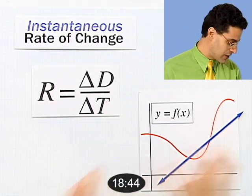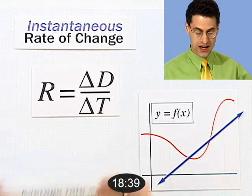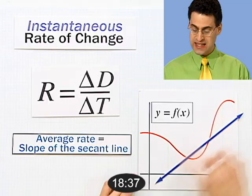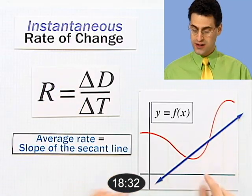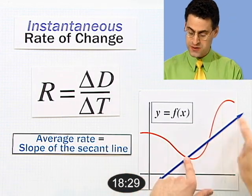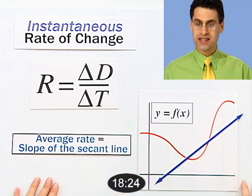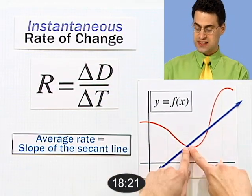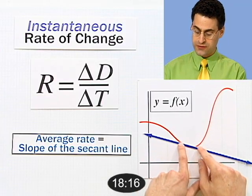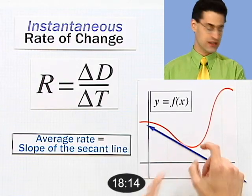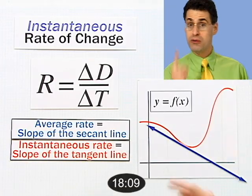Now we can find average rate. A line that touches the curve at two points is called a secant line. The average rate — change in distance over change in time — equals the slope of the secant line. If you want to find instantaneous rate, you make that secant line closer and closer, bring the points together, and you converge to a tangent line. Instantaneous rate of change equals the slope of the tangent line.